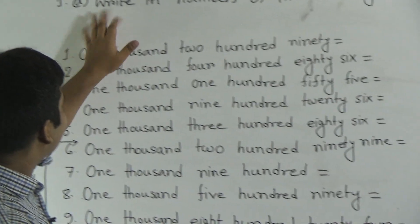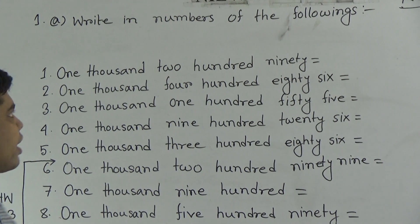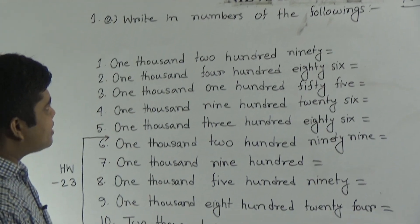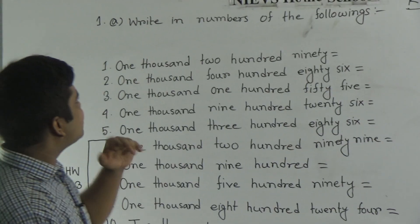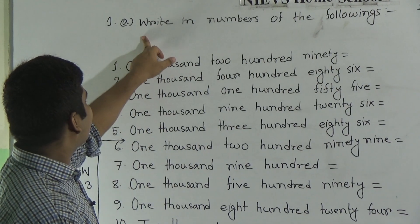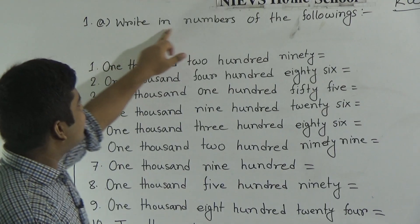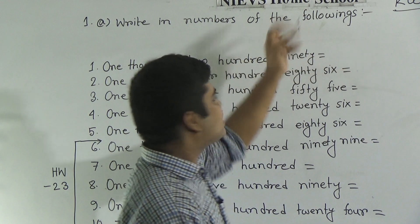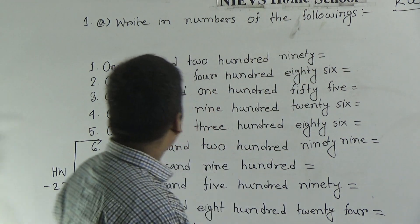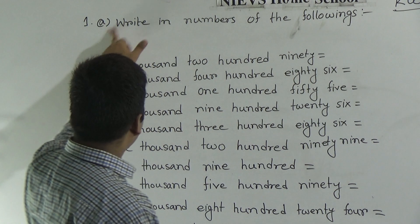My dear students, we have already taken a class on 'Write in Numbers.' Today we shall take the class on how to answer the question of this topic — that means question number 1A: Write in Numbers of the Followings. Suppose this is your question paper and question number 1A has come.